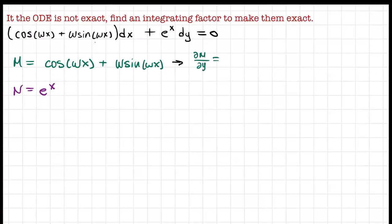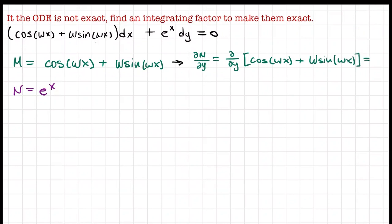Let's test for exactness. We compute partial M partial y — the partial derivative with respect to y of cosine of omega x plus omega sine of omega x — and since there is no y present in that expression, all of it is just zero.